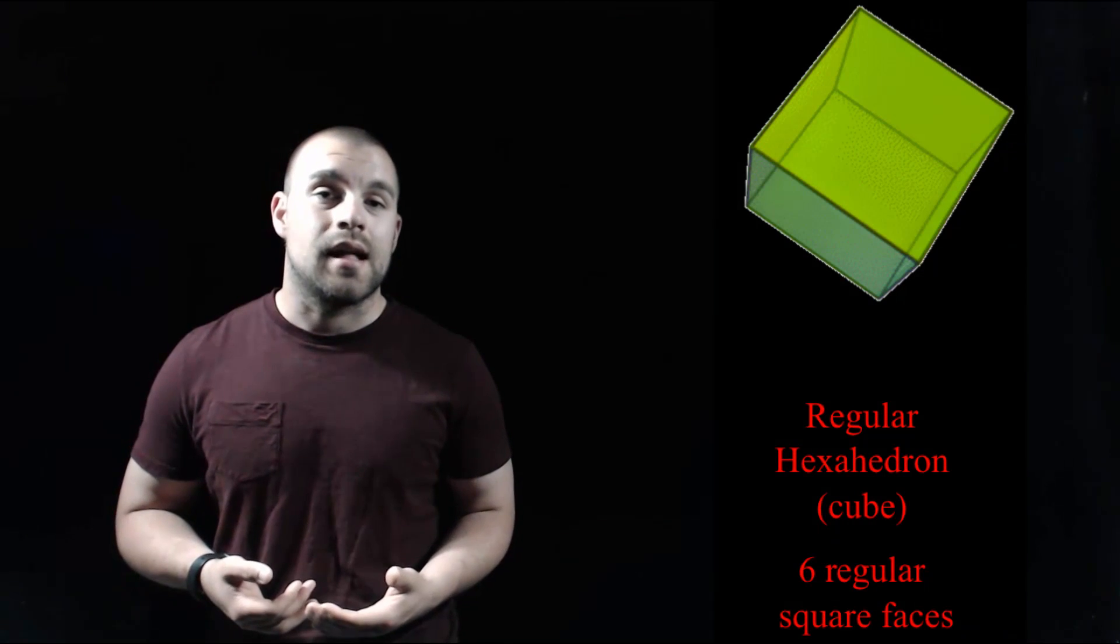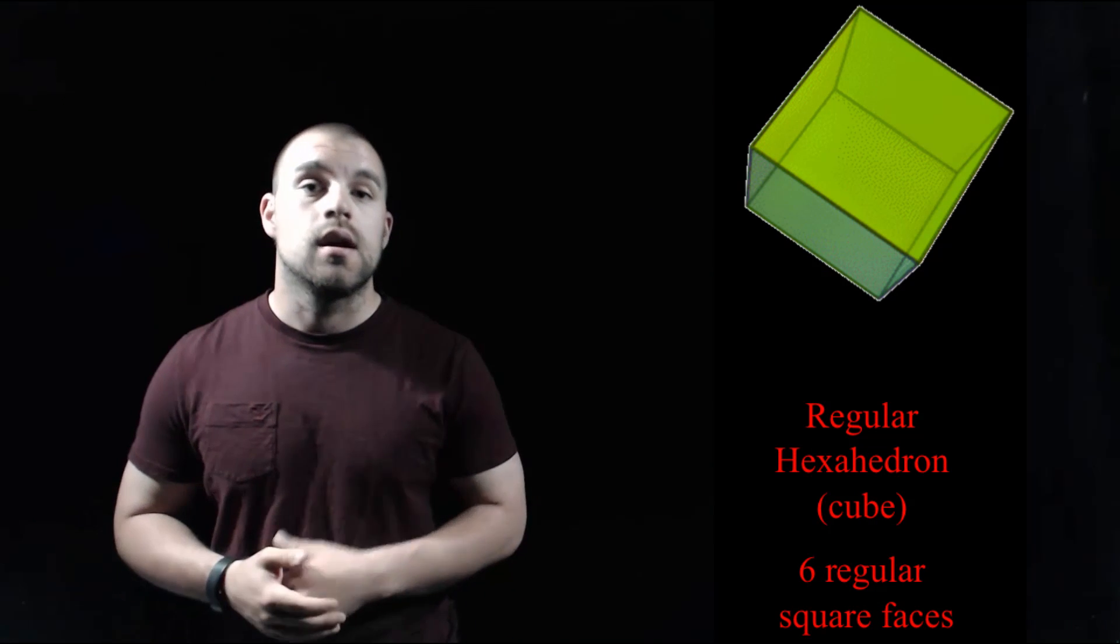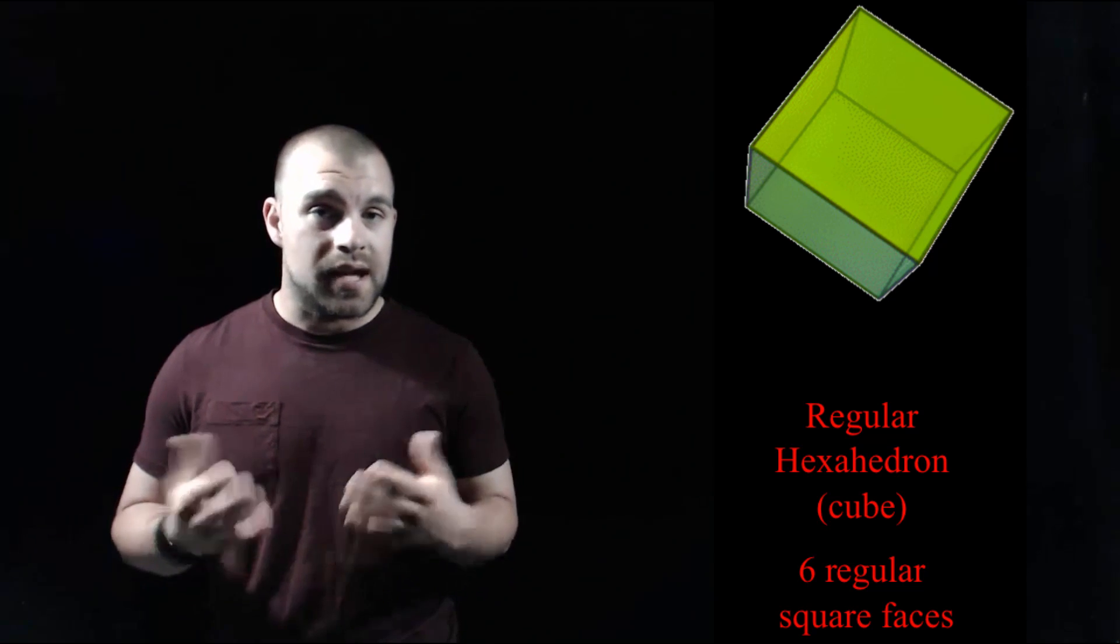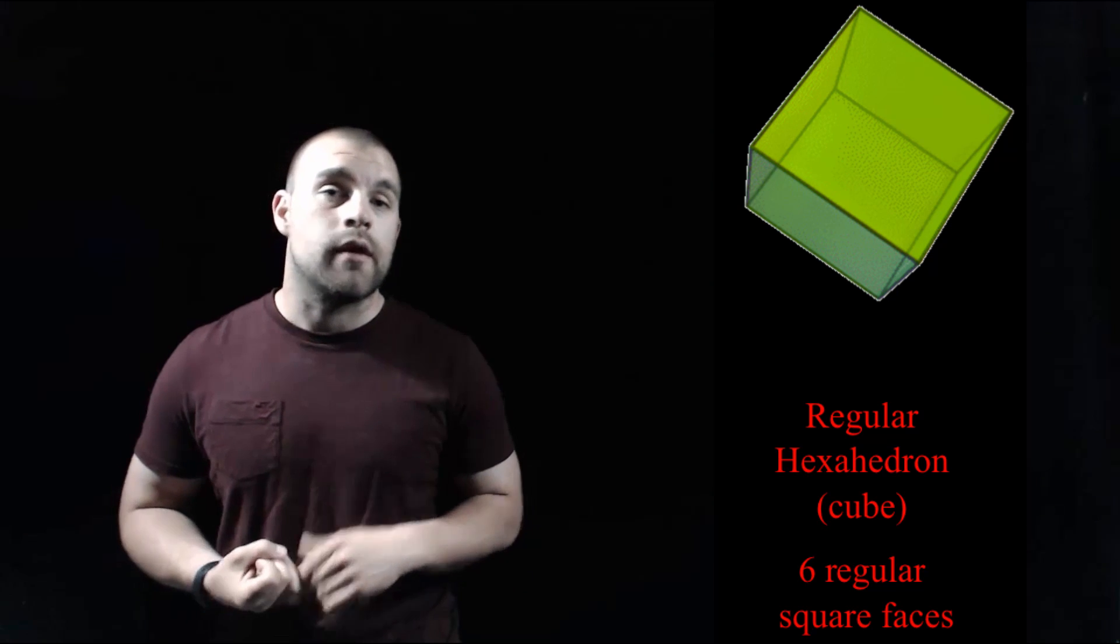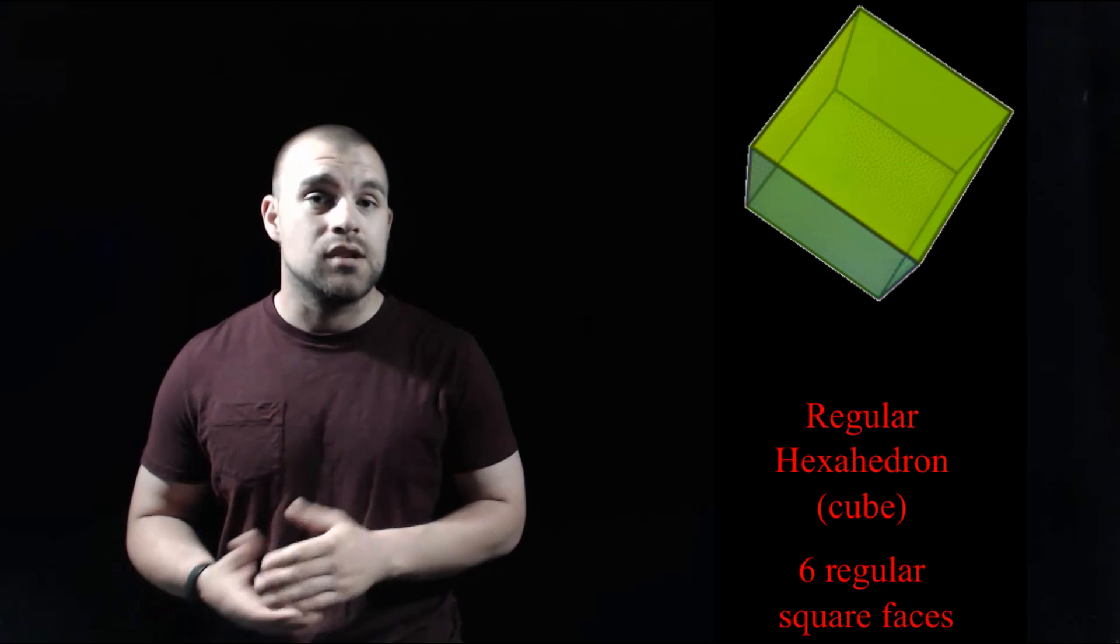The next platonic solid is a regular hexahedron but the more common name for it is a cube. There are six congruent square faces on a regular hexahedron.